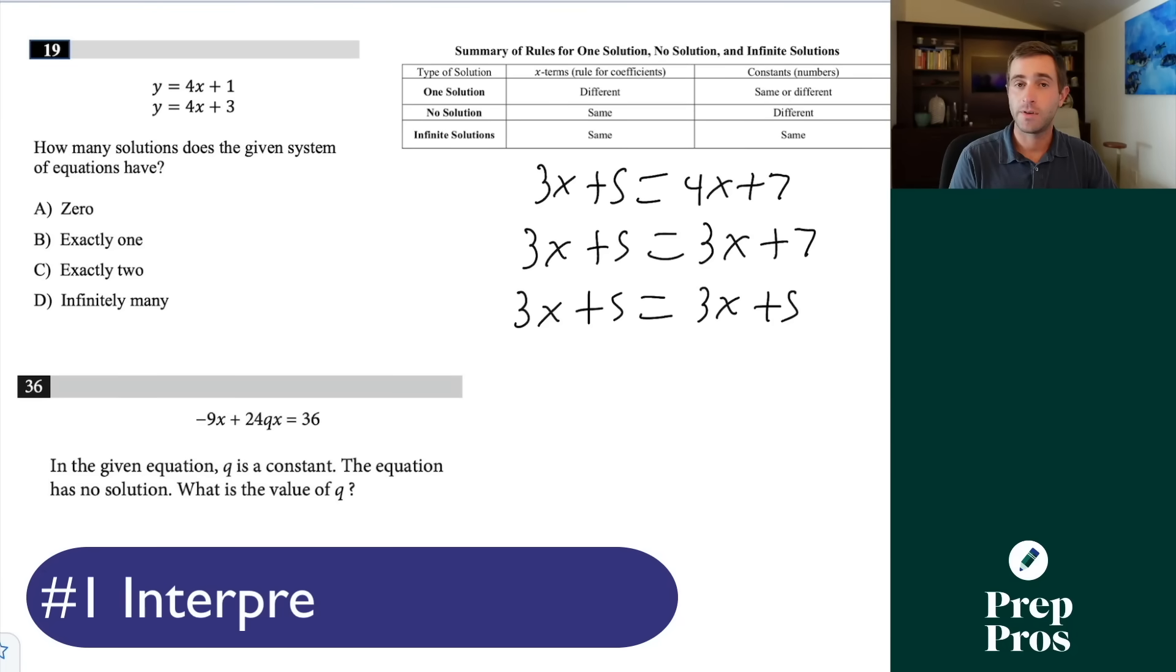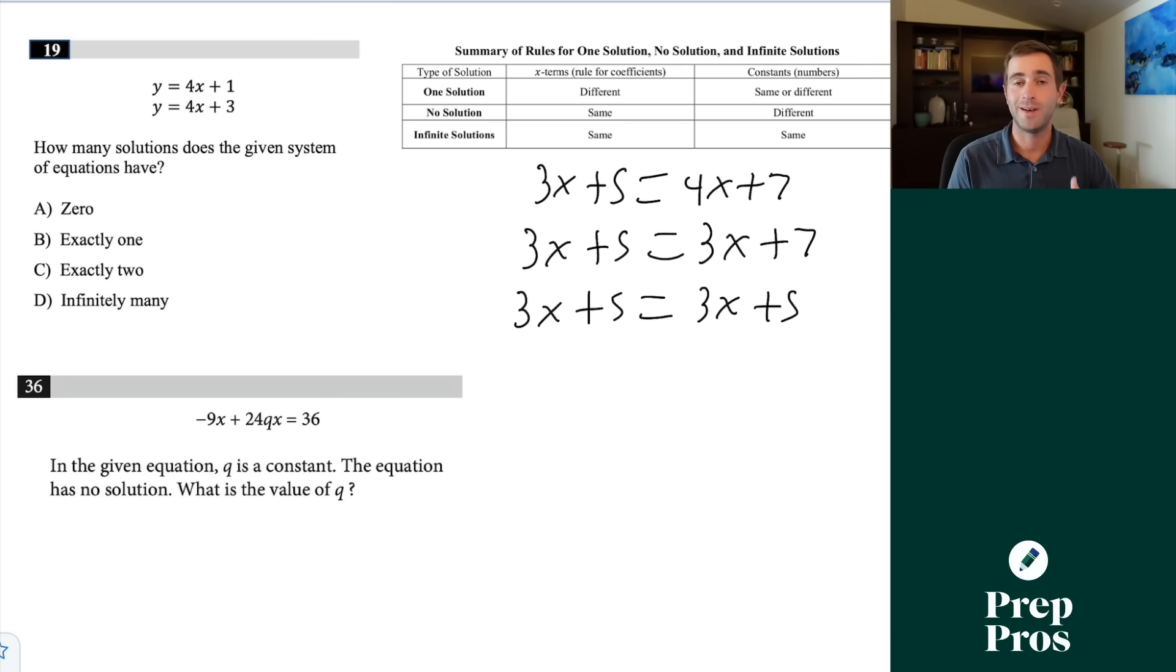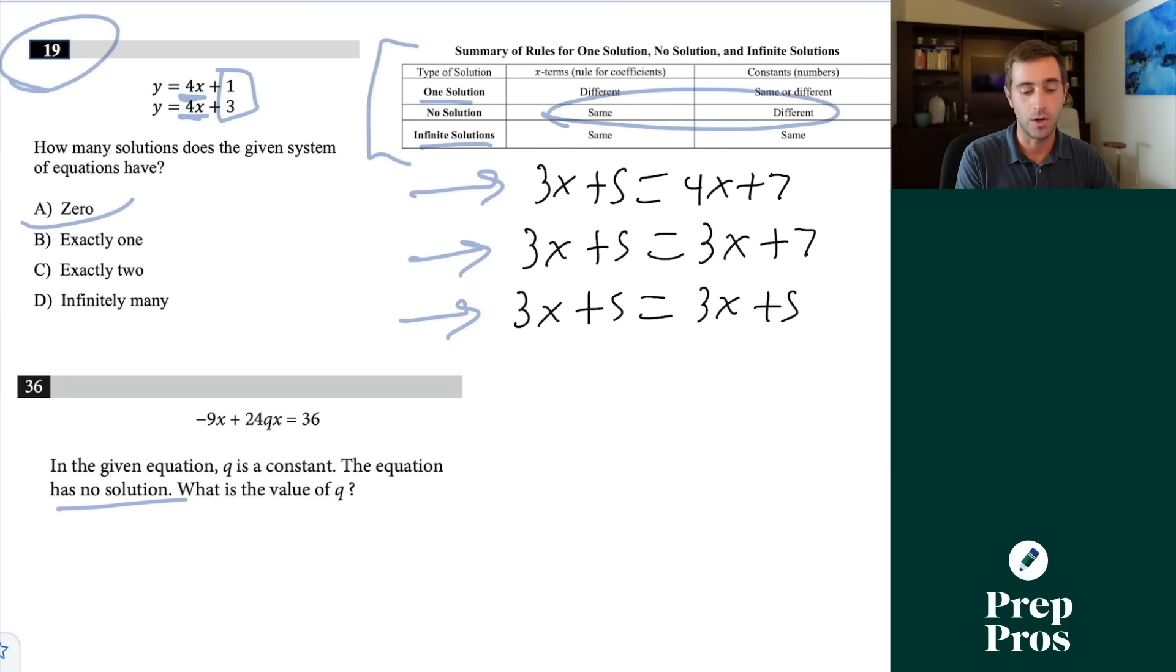The first thing you're definitely going to see on your October SAT are interpreting constants questions. These ask about the number or type of solutions when dealing with linear equations - whether we have no solution, one solution, or infinite solutions. We'll talk about the more advanced versions with quadratics and discriminant rules later. This table from my book is something you want to memorize. Let's take a look at question 19. Our x coefficients are the same, our numbers are different, so we have no solutions here.